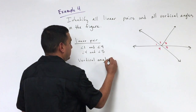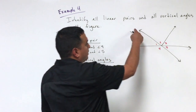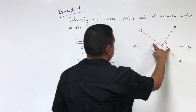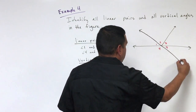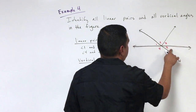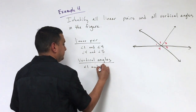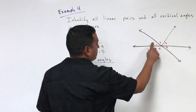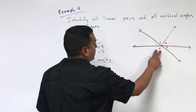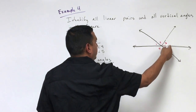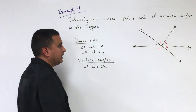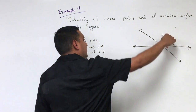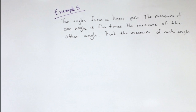Now for vertical angles — those are formed when two lines intersect. Here, one line crosses another, so angle one and angle five would be a pair of vertical angles. Angle four would be vertical to the angle across from it, but that angle wasn't given a name in the figure, so we can't name that pair. Those are the vertical angles we can identify.